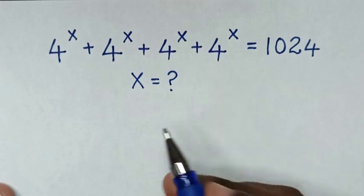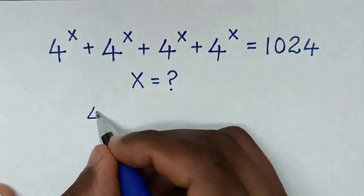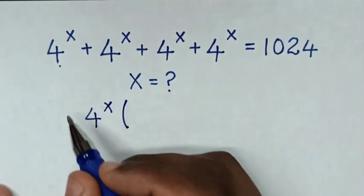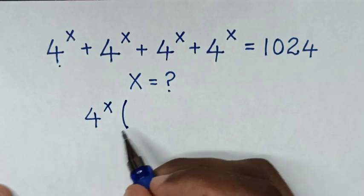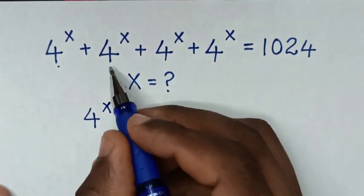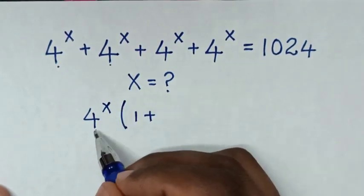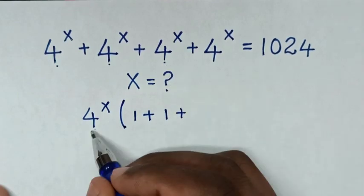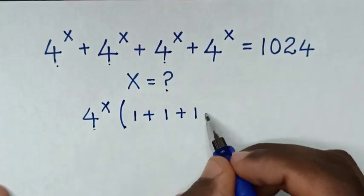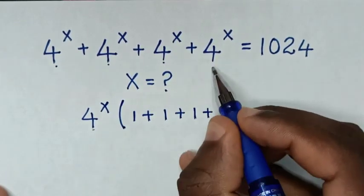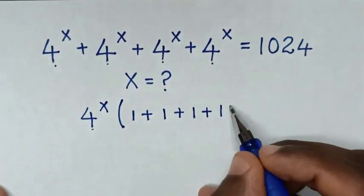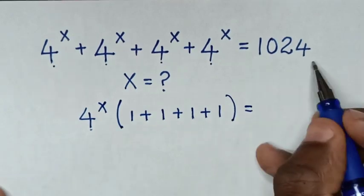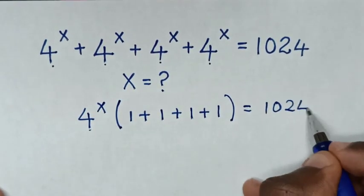From here, 4 power of x is common, so we take 4 power of x out of the bracket. 4 power of x divided by 4 power of x is 1, plus 1, plus 1, plus 1, is equal to 1024.